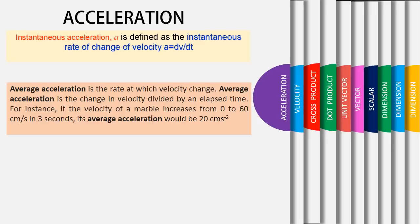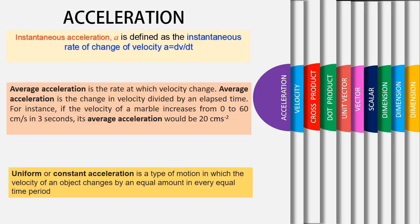Its average acceleration would be 20 cm per second squared. Uniform or constant acceleration is a type of motion in which the velocity of an object changes by an equal amount in every equal time period.